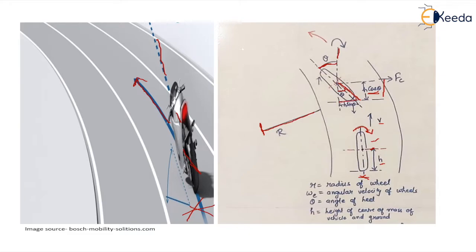The horizontal component is h sin theta, which we will discuss ahead. The angle which the vehicle makes with the vertical — which the center of the wheel makes with the vertical — is also known as the angle of heel. Radius of wheel is denoted by small r and the angular velocity of wheels is denoted by omega_w.